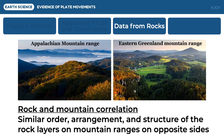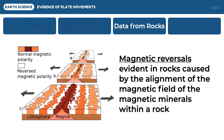This means that similar order, arrangement, and structure of the rock layers and mountain ranges on opposite sides support the idea that continents were connected before. This is what we call rock and mountain correlation. This is one piece of information which we can get from rocks. Another evidence from rocks is magnetic reversal.